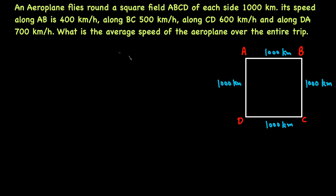In the third example, an aeroplane flies around a square field labeled A, B, C, and D. Each side is 1000 kilometers. The speed along AB is 400 km/h, along BC is 500 km/h, along CD is 600 km/h, and along DA is 700 km/h.